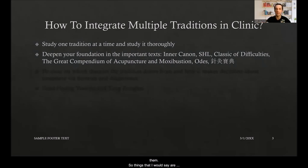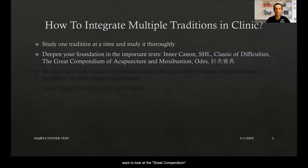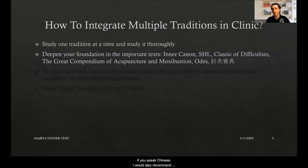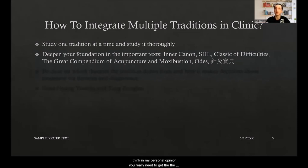The texts I'd recommend include the Inner Canon, the Shang Han Lun or Treatise on Cold Damage, and the Classic of Difficulties. For acupuncture, also look at the Great Compendium and the Odes. If you read Chinese, I'd also recommend Yang Weijia's Zhenjiu Baodian. For herbs, you really need to get the Shang Han Lun and Jing Gui Yao Lue down first, because everything grows out of that.